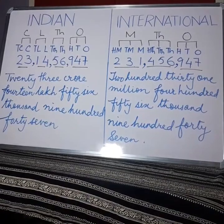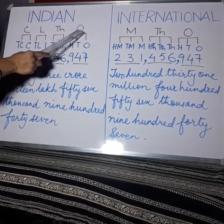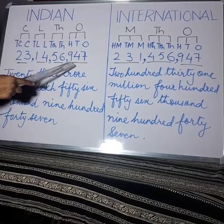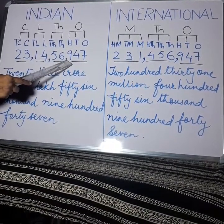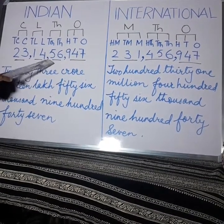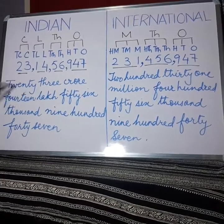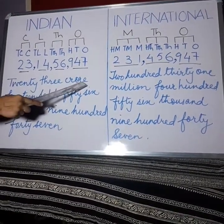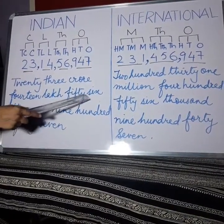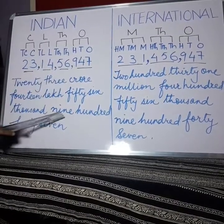To summarize: in the Indian System, we have one period with three places. When we write the number, we put a comma after the Ones period, then a comma after the Thousands period, then a comma after the Lakhs period, and read them together. For example: 23 crore, 14 lakh, 56,947.